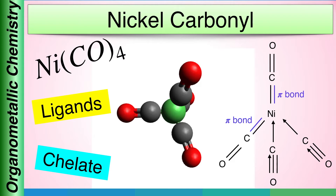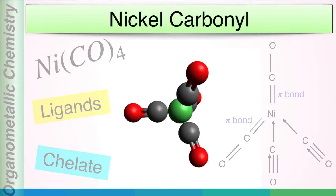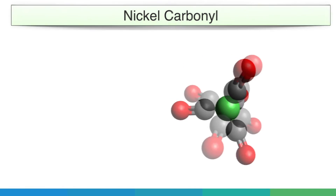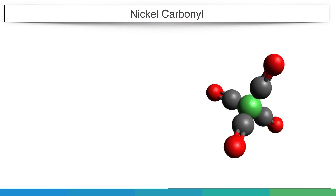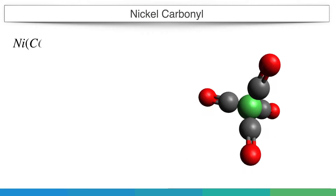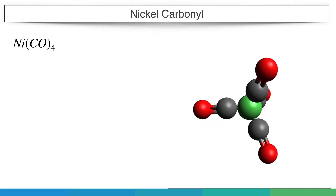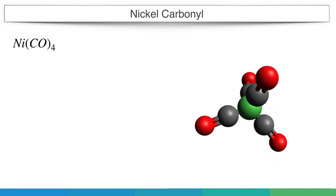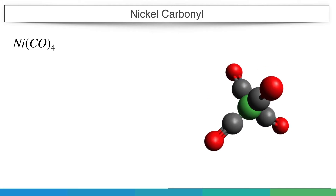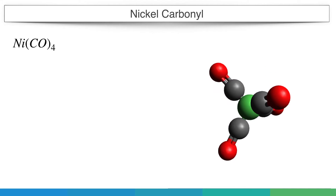Preparation, structure and properties of nickel tetracarbonyl. Nickel forms only one carbonyl — nickel carbonyl or tetracarbonyl nickel. This organo-nickel compound has the formula Ni(CO)4.